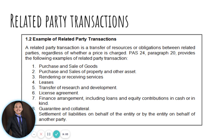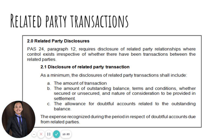Examples of related party transactions include: purchase and sale of goods; purchase and sale of property and other assets; rendering or receiving services; leases, whether from the perspective of the lessor or lessee; transfer of research and development; license agreements; finance arrangements including loans and equity contributions in cash or in kind; guarantees or collateral; and settlement of liabilities on behalf of the entity or by the entity on behalf of another party.